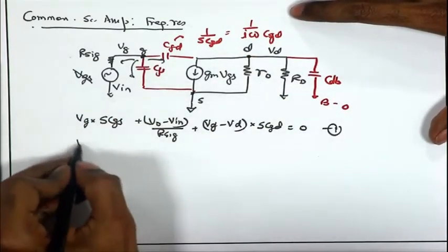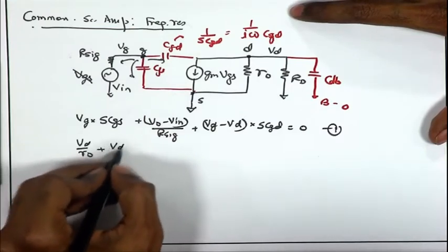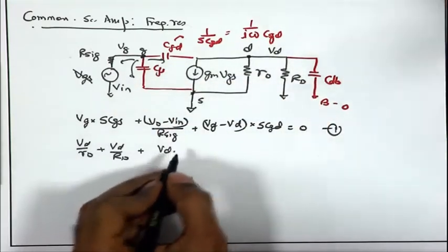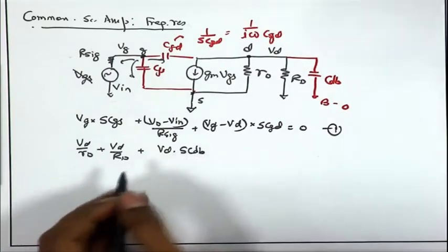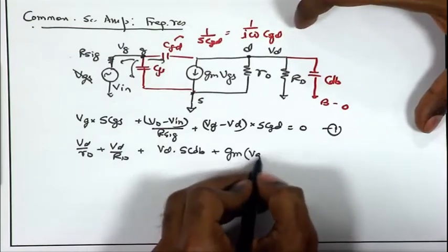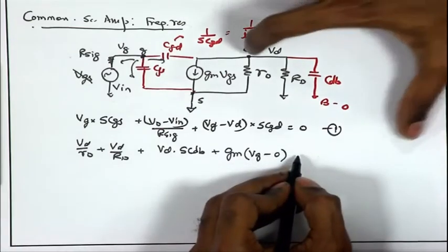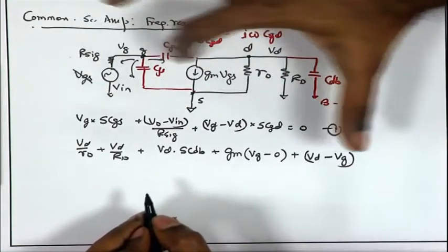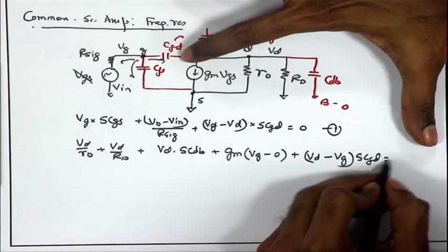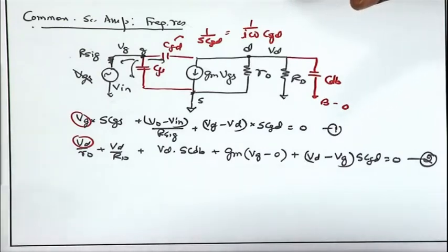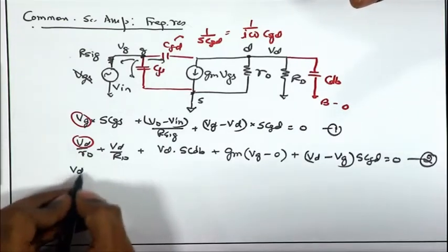At the drain node: VD/R_O + VD/R_D + VD·(sCDB) + gm·VGS, where VGS = VG, plus the last component (VD − VG)·(sCGD) = 0. So we get a second equation and, with two unknowns VG and VD and two equations, we can solve to find the exact expression for VD as a function of V_in.